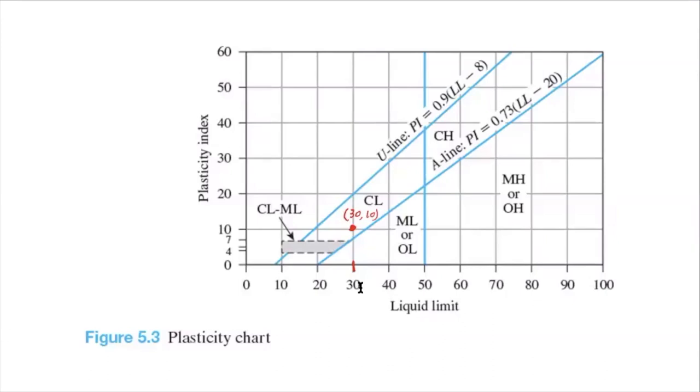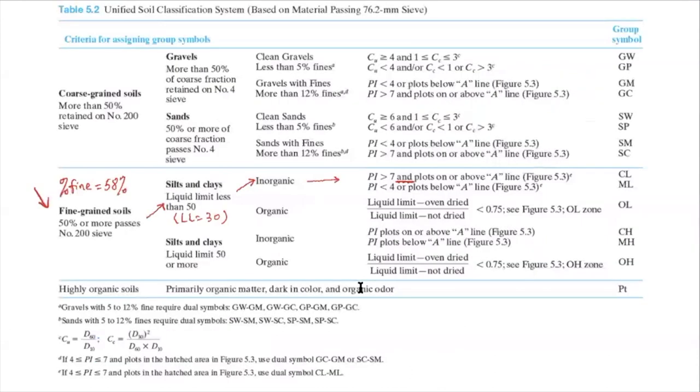So that means we meet both conditions. PI is greater than seven. And the soil plots above A line. And then the group symbol CL. So that's the group symbol.